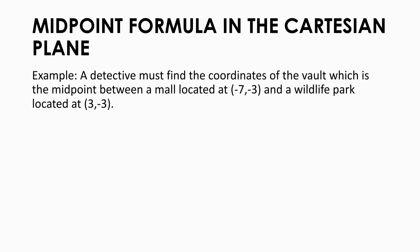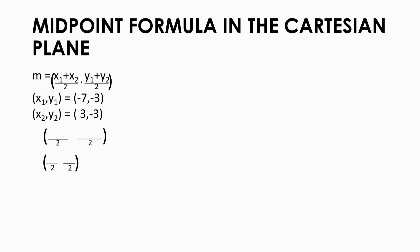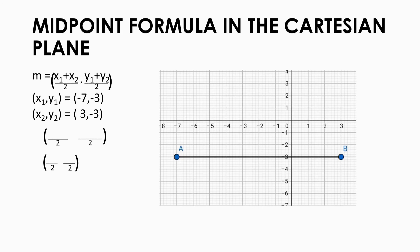Let's say that a detective must find the coordinates of the vault, which is the midpoint between a mall located at (negative 7, negative 3) and a wildlife park located at (positive 3, negative 3). Don't worry, this is very simple because all you need to do is substitute. Of course, you have to plot the points first, then proceed to substitution.